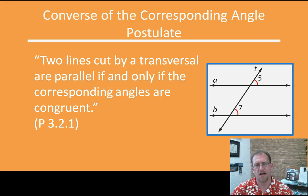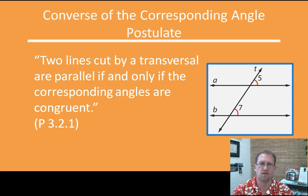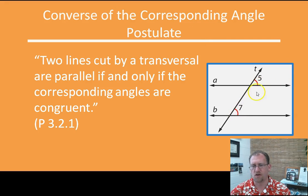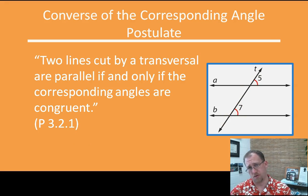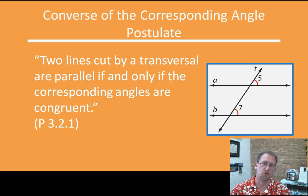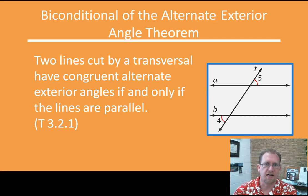Two lines cut by a transversal are parallel if and only if the corresponding angles are congruent. So if these two things are congruent, then these two lines are parallel. If these lines are parallel, these two angles are congruent. This allows you to use that statement both directions: if the lines are parallel, the angles are congruent; if the angles are congruent, the lines are parallel.